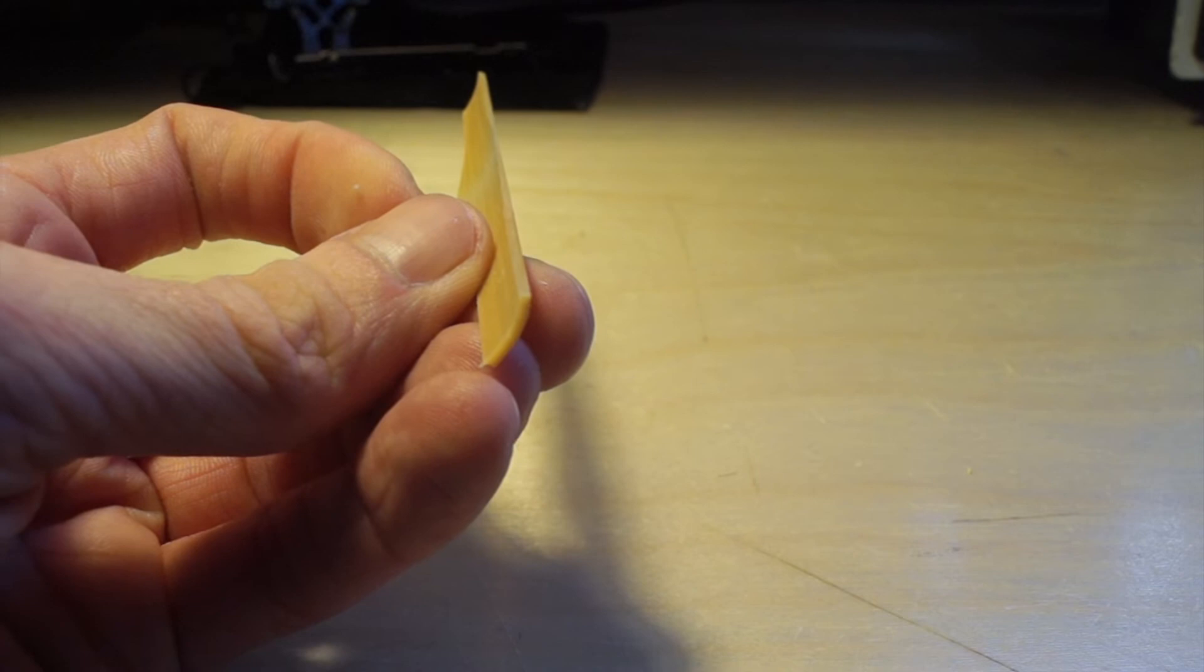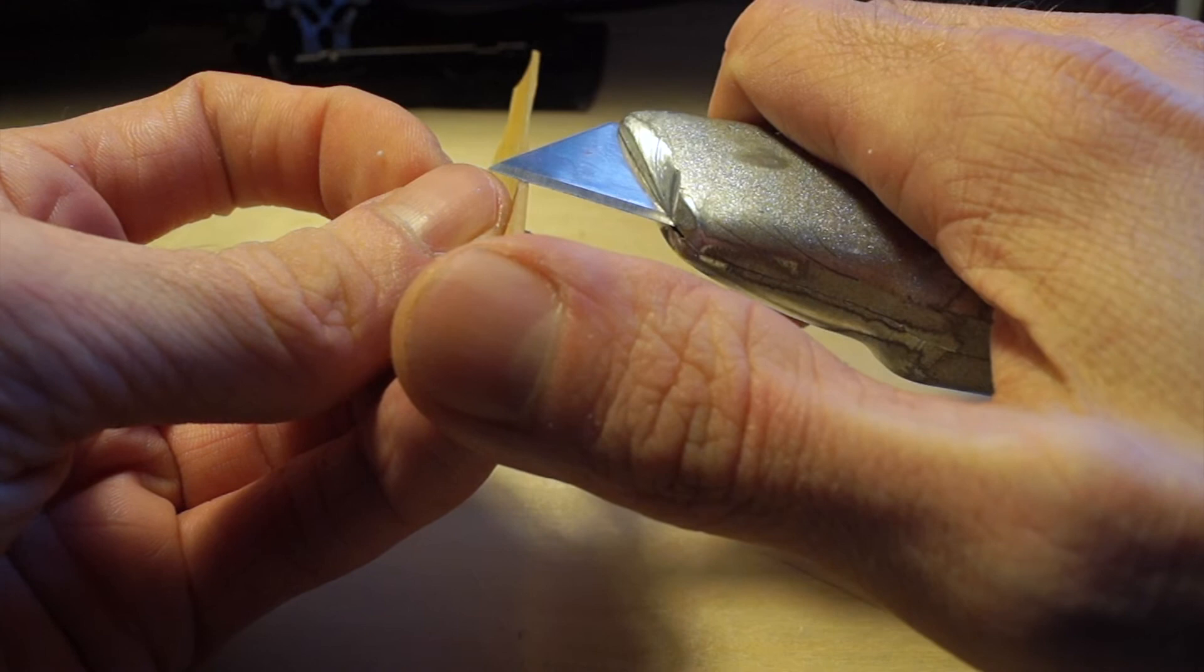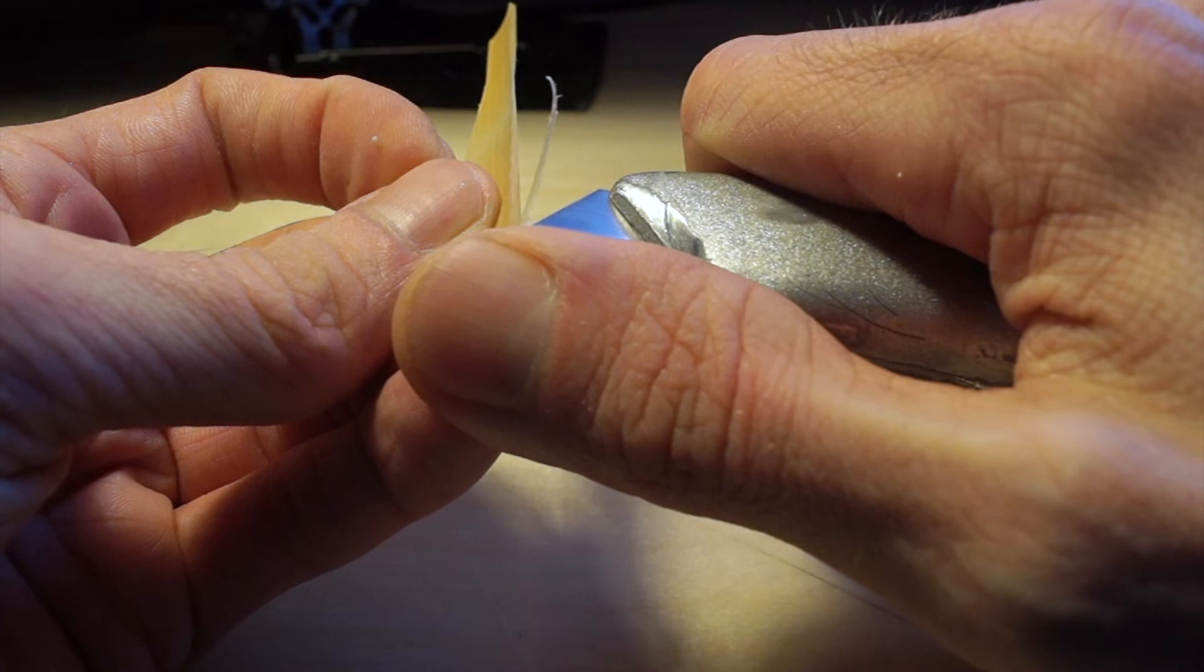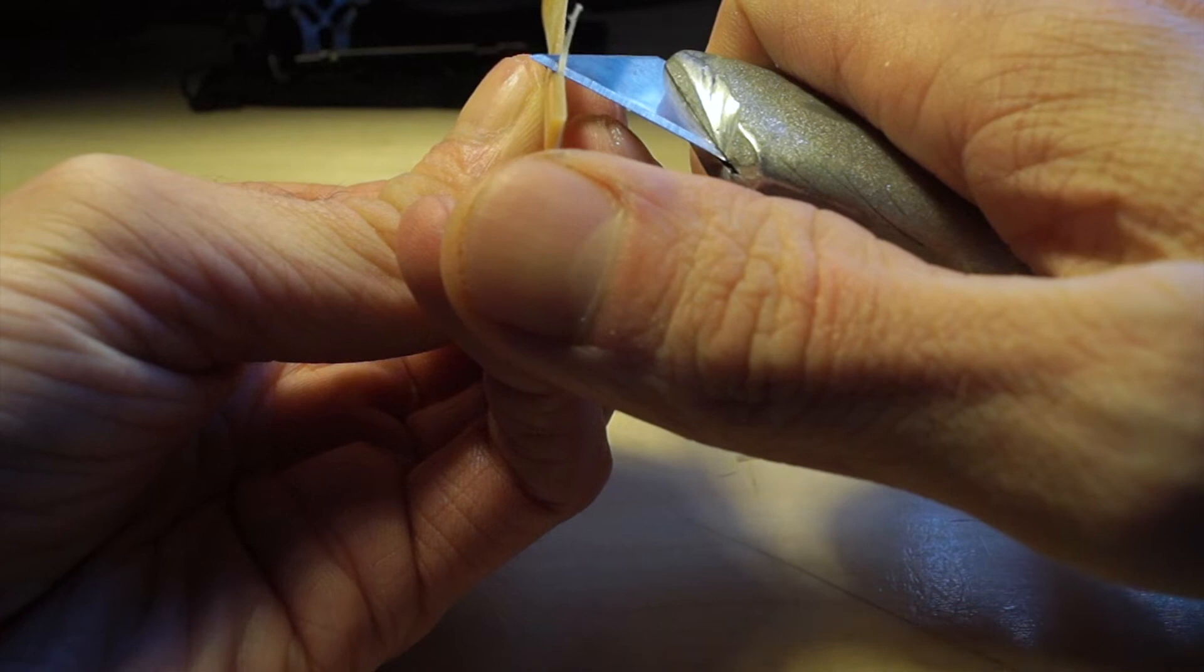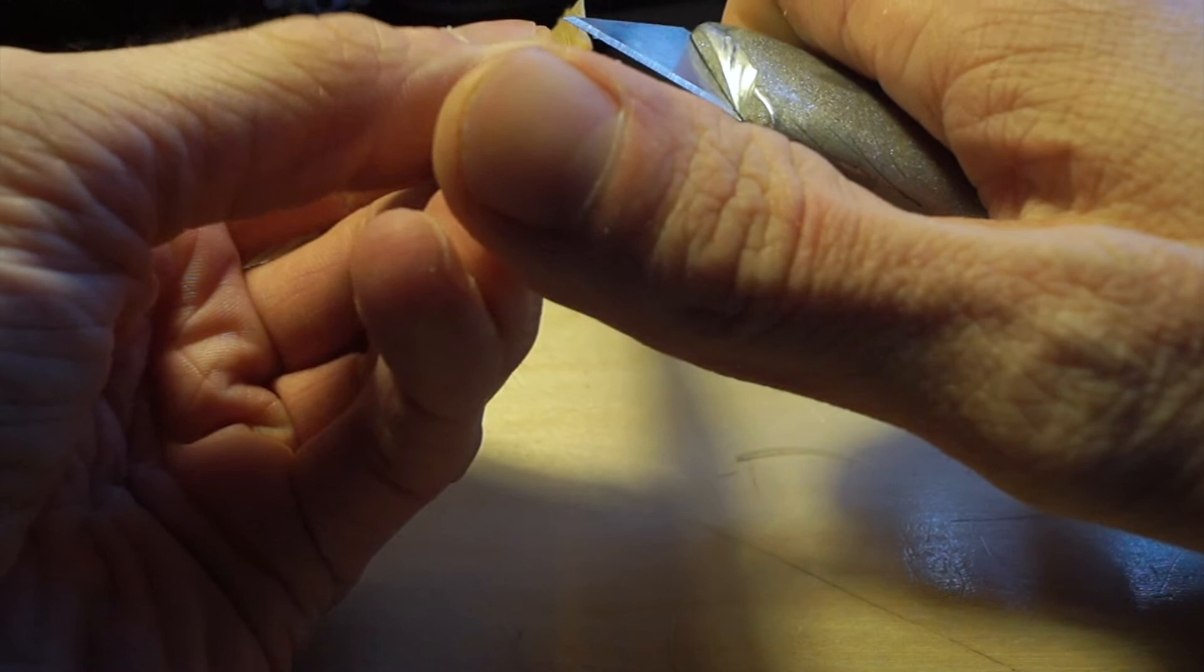So we're going to bevel the edges here with a Stanley knife. It's important to make sure you've got a very sharp blade so it's worth replacing it before doing this job. And you can see here I'm supporting my cutting hand with my right thumb as an anchor point on the base of the reed and just removing a very small sliver on that leading edge.